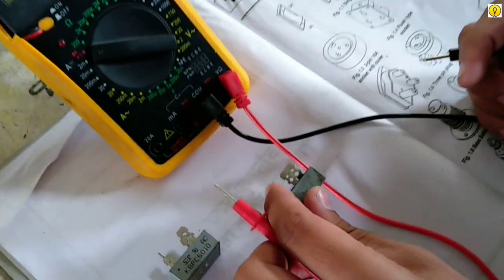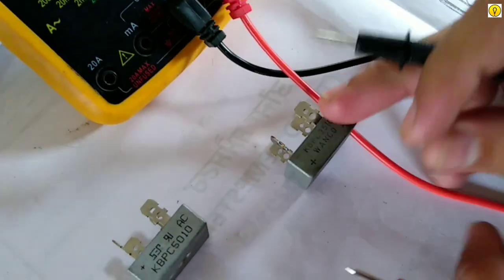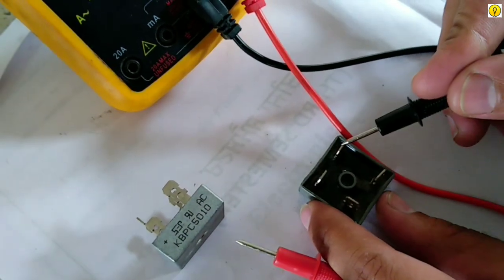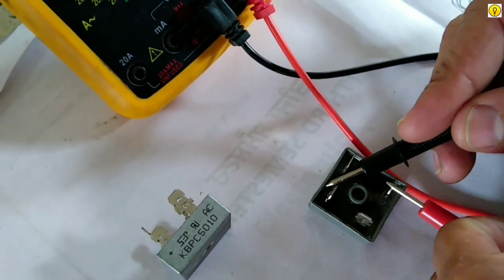The one side is positive and the opposite side is a negative side. These are for input supply. Now we are going to check.